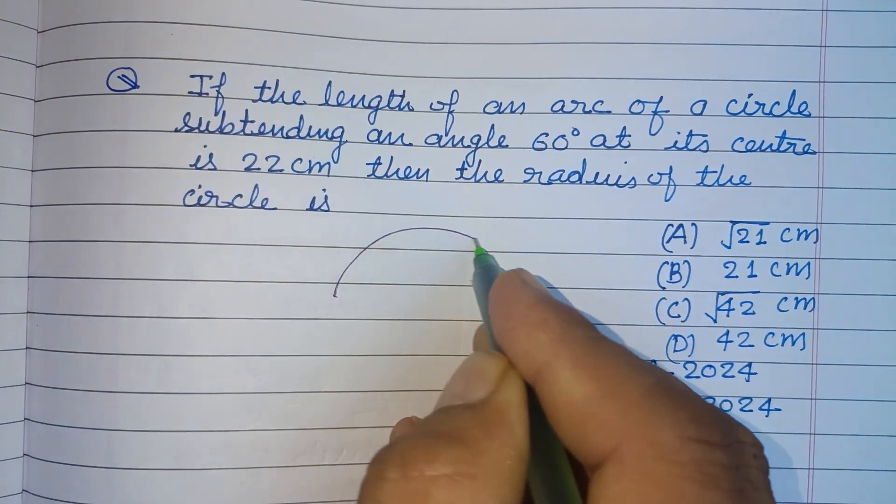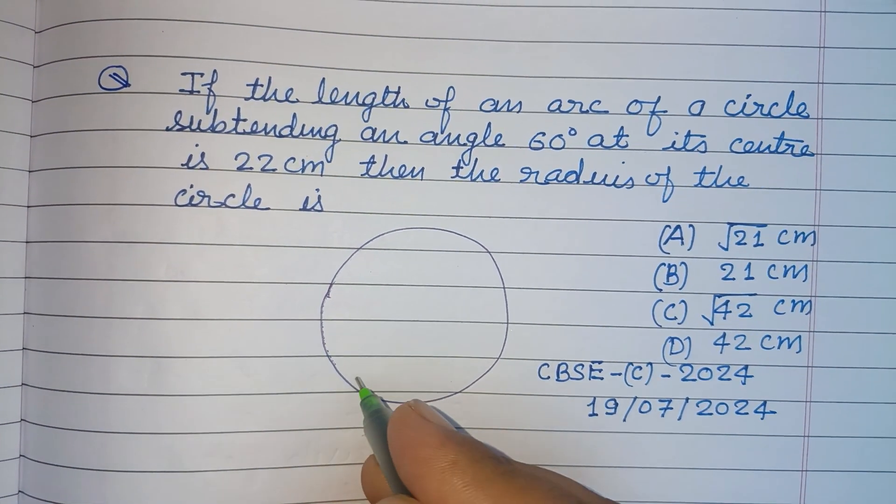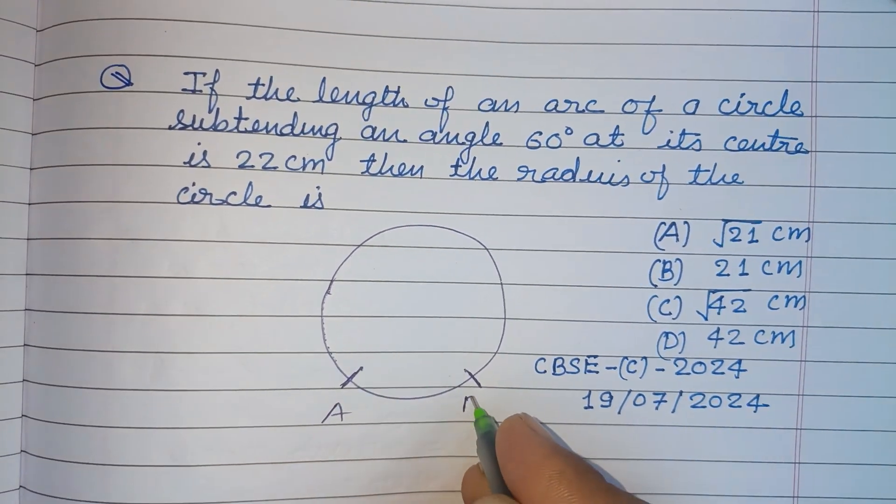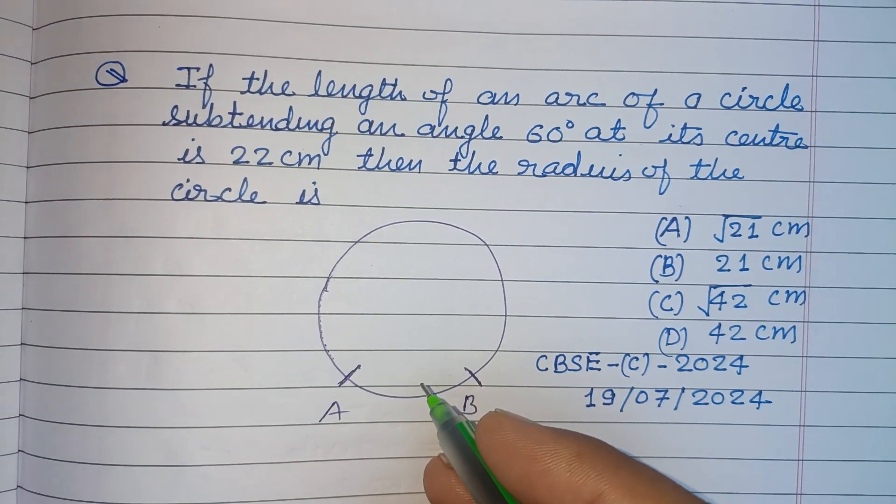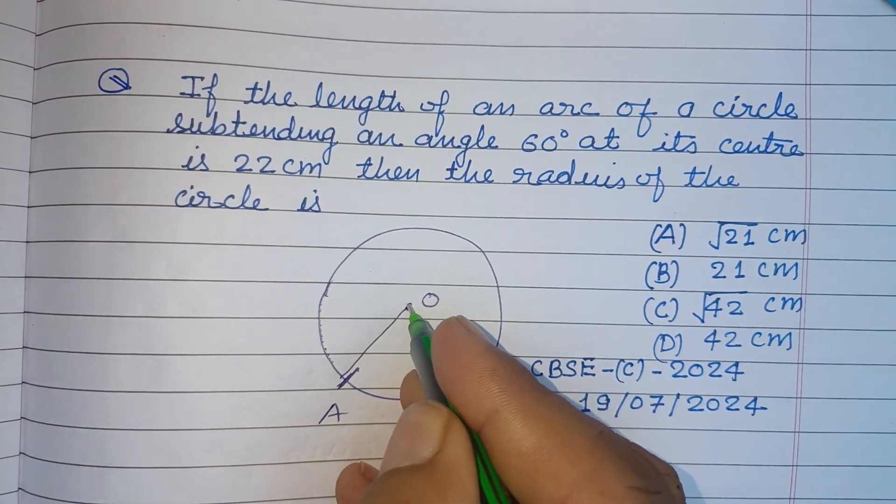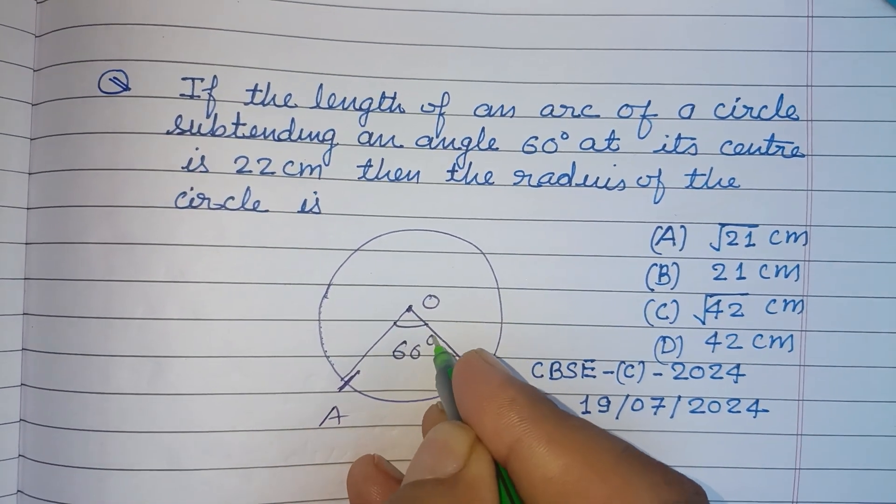So students, here is an arc of the circle AB which is sustaining an angle of 60 at the center. This is the center, and the angle sustained by this arc is 60 degrees.